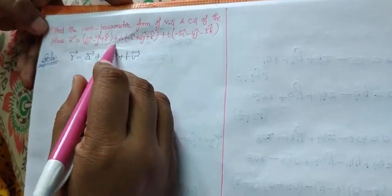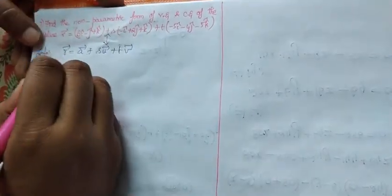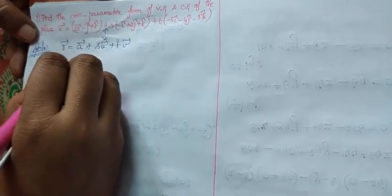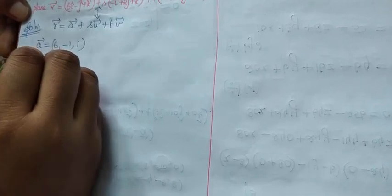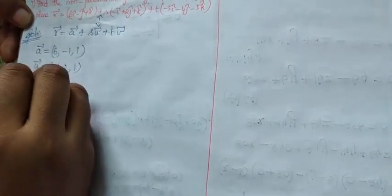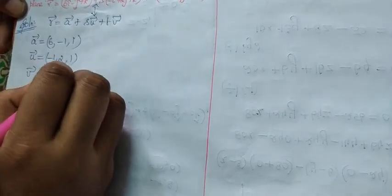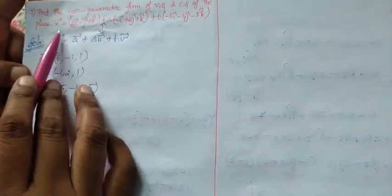Now compare these two equations. We get: a vector equal to (6, -1, 1), u vector equal to (-1, 2, 1), and v vector equal to (-5, -4, -5). So here it is a single point and two direction vectors.